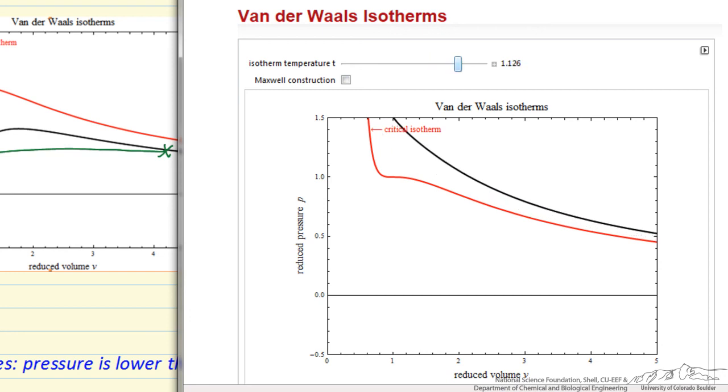So the van der Waals equation of state, given just the critical pressure and the critical temperature for a gas, allows us to calculate more accurate physical properties for that particular gas.